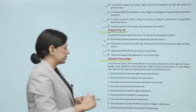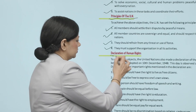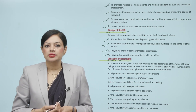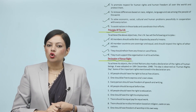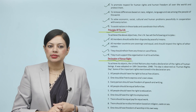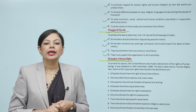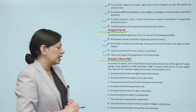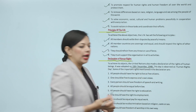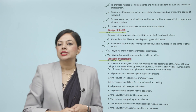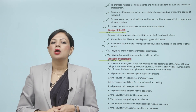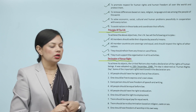Declaration of Human Rights. To achieve its objectives, the United Nations also made a Declaration of the Rights of Human Beings. It was adopted on 10th December 1948, and this day is observed as Human Rights Day.